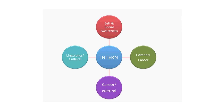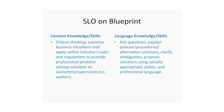After analyzing all the context and relationships, one content outcome might be critical thinking: students will be able to examine business situations and apply airline industry rules and regulations to provide professional problem-solving solutions to customers, supervisors, and coworkers. Then think about what language skills are needed: students should be able to ask questions, explain policies and procedures, offer alternative solutions, clarify ambiguities, and propose solutions using socially appropriate, polite, and professional language.